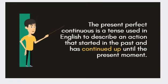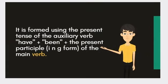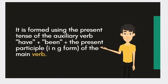The present perfect continuous is a tense used in English to describe an action that started in the past and has continued up until the present moment. It is formed using the present tense of the auxiliary verb have, plus been, plus the present participle (ing form) of the main verb.